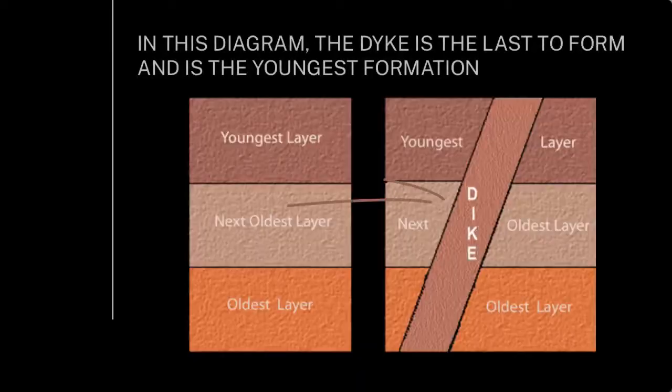It's another one of those principles, like Steno's principles, where you know that younger rocks are sitting on top of older ones. When you have cross-cutting relationships, the rocks that are cross-cutting the other rocks are progressively younger. You can get a series of events — you may have more than one dike swarm cutting across, an early one, then another one that cuts across that, and another one that cuts across that, getting progressively younger.